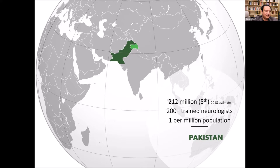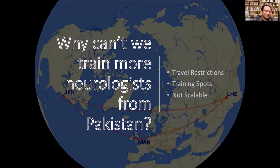If you take the larger portion of the Middle East around it, the situation is not any better. Just in the United States alone, there are more than 400 neurologists from Pakistan, and I actually know more than 200 of them. So one of the questions I started asking myself when I first went back in 2014 was: why can't we train more neurologists from Pakistan?